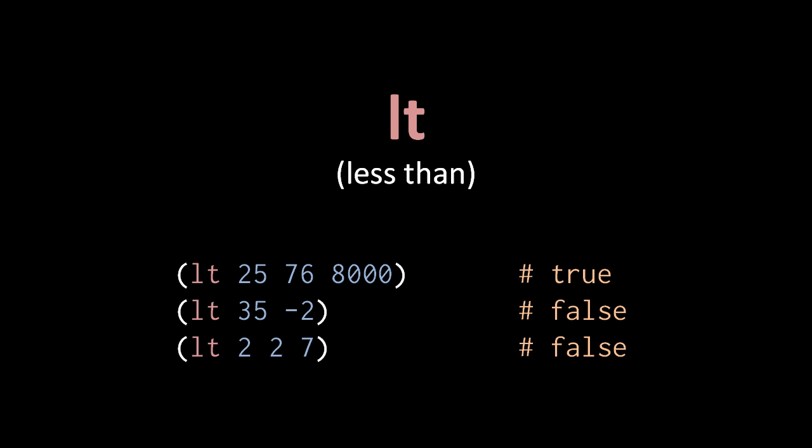To have more interesting condition expressions, we need a few more operators. First, there's the less than operator, which returns true when its operands, which all must be numbers, increase in value from left to right.